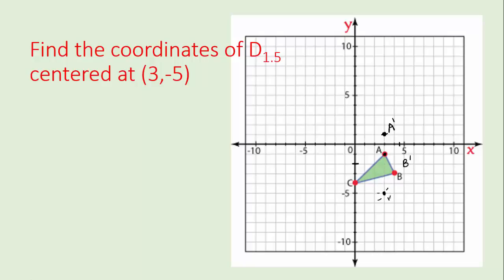Finally, let's find C prime. The horizontal distance from the center over to C is three units. One and a half threes is three plus half of three, which is four and a half. So the new horizontal distance places it at negative one point five. The vertical distance from the center to C is one unit. One and a half times one is one and a half, so we go one and a half — that lands at negative three and a half. C prime is right there in the middle of that square.